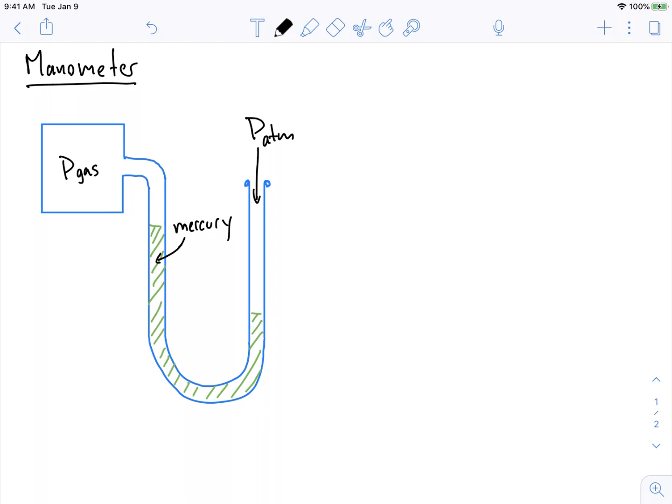So the first thing we want to do is to be able to identify some points in this. We want to be able to relate the pressure of the gas to the pressure of the atmosphere. And what we're going to do is use the idea of hydrostatic equilibrium. So I know over here I have some height over here.